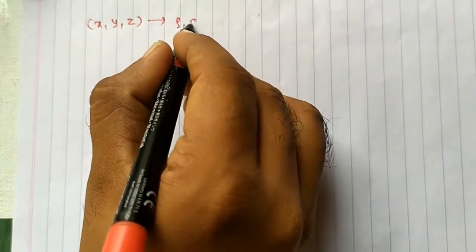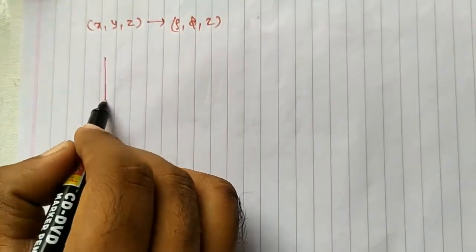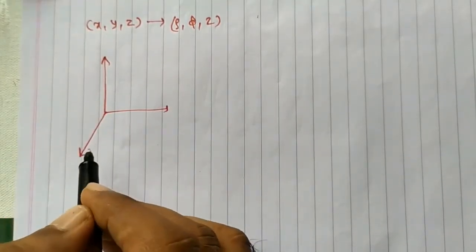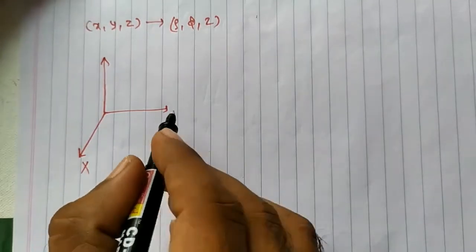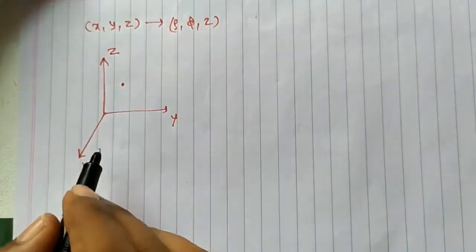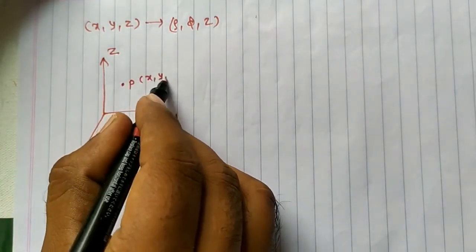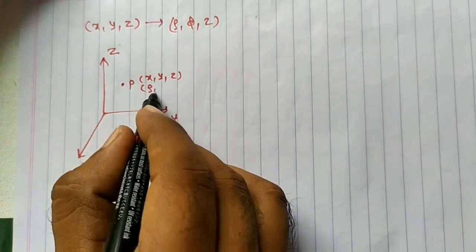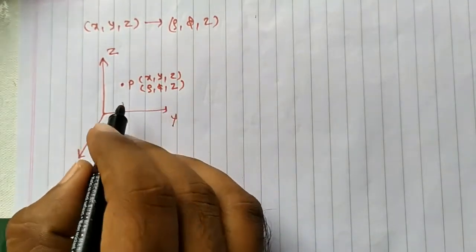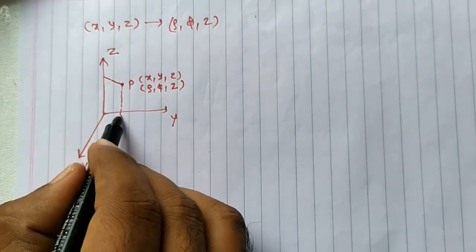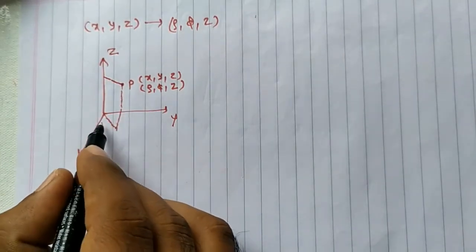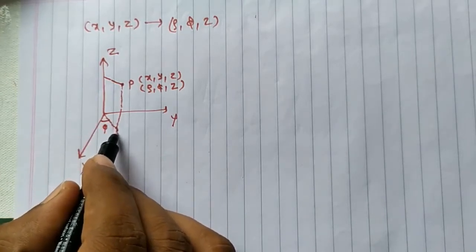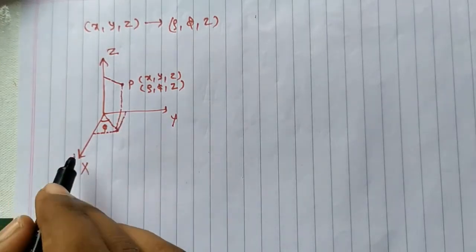Now we will try to find the transformation equations between the Cartesian coordinate system and the cylindrical coordinate system. Cartesian coordinates are x, y, z and cylindrical coordinates are rho, phi, z. I will draw a diagram for that: this is the x-axis, this is the y-axis, this is the z-axis, and this is a point P whose Cartesian coordinates are x, y, z and cylindrical coordinates are rho, phi, z. I will draw a plane whose edge is on the z-axis, where this angle is phi.